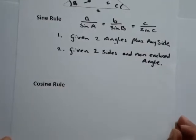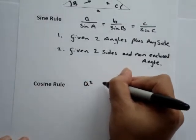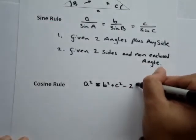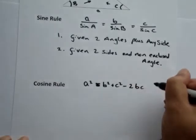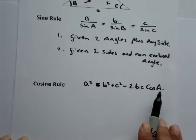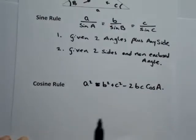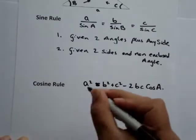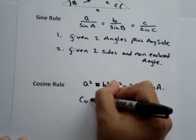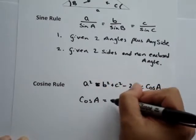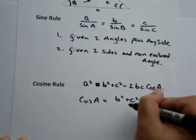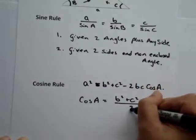The cosine rule is A squared equals B squared plus C squared minus 2BC cos A. The A here corresponds to the angle A. Another way of writing this is cos A equals B squared plus C squared minus A squared, all divided by 2BC.